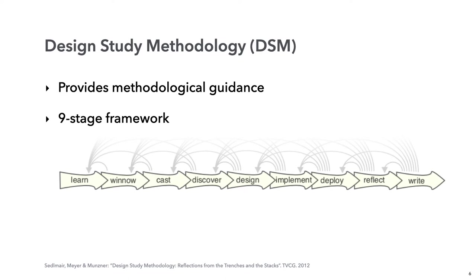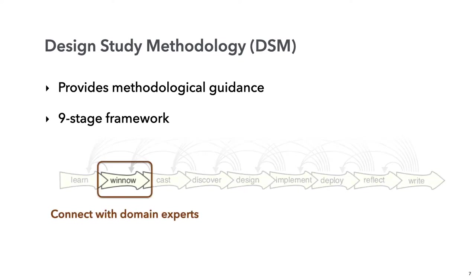The DSM suggests to connect with domain experts at an early winnow stage, to understand their problems and to find out if there is a relevant research question. This winnowing process can take some time. A careful selection is necessary because not all potential collaborations are a good match. We now characterize this approach as a stakeholder-first ordering.